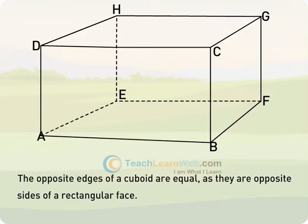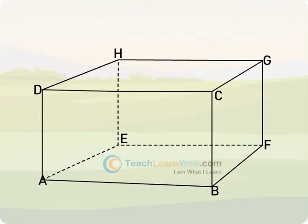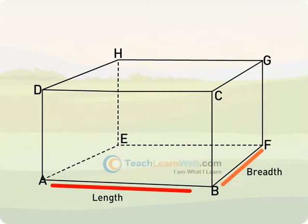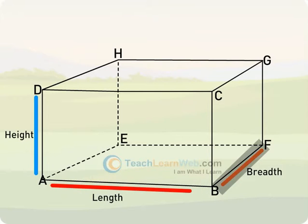We can say that a cuboid has only three different dimensions: length, breadth, and height. Length is equal to AB, breadth is equal to BF, and height is equal to AD.